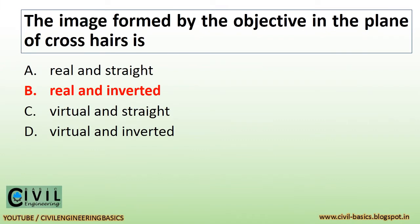The image formed by the objective and the plane of crosshairs is real and inverted.